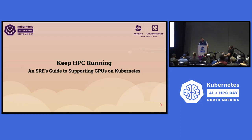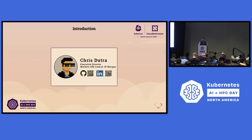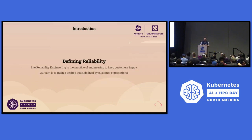Thanks for having me. My name is Chris. I'm the markets SRE lead at JPMorgan. I'm also responsible for the high-performance computing platform that we run within the markets organization, which is used to power a bunch of our businesses. I'm going to talk today about operational considerations when you're supporting HPC or other GPU type workloads in Kubernetes.